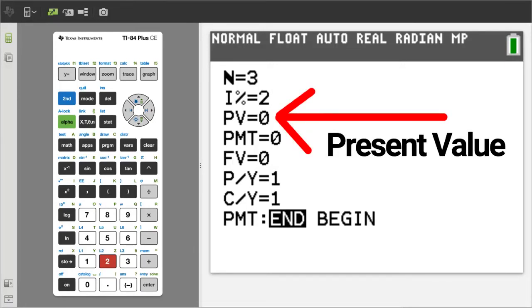Go down to the next variable, PV. PV stands for Present Value. When doing time value of money problems, when you take money out of your pocket to invest, use a negative sign.